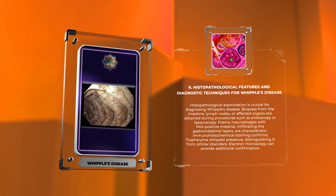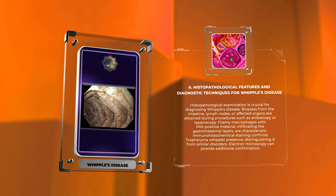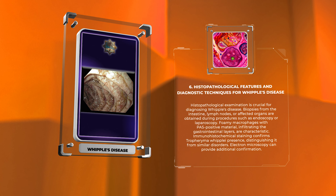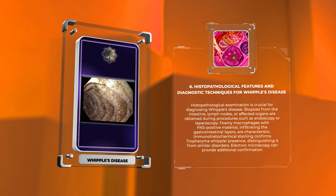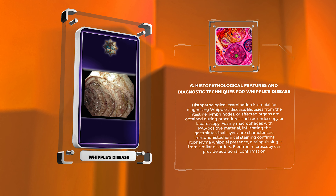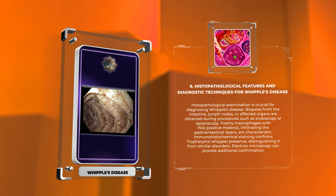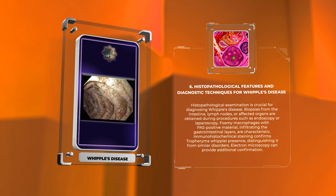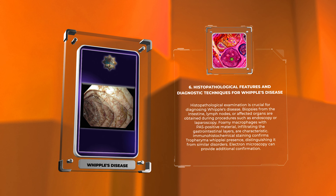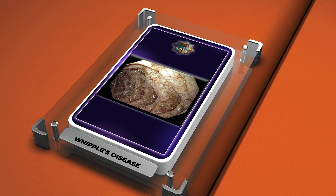Foamy macrophages with PAS-positive material, infiltrating the gastrointestinal layers, are characteristic. Immunohistochemical staining confirms Tropheryma whipplei presence, distinguishing it from similar disorders. Electron microscopy can provide additional confirmation.